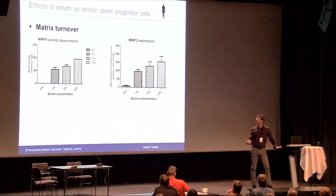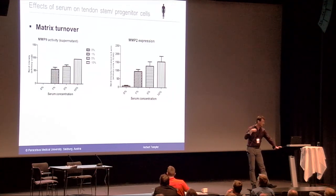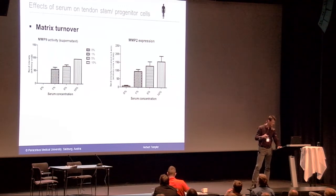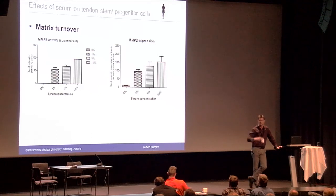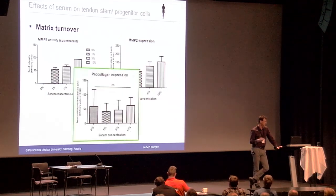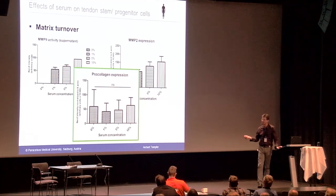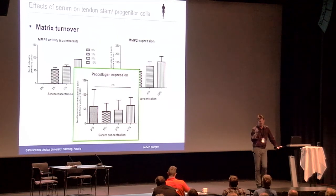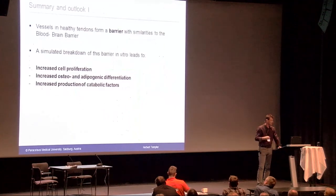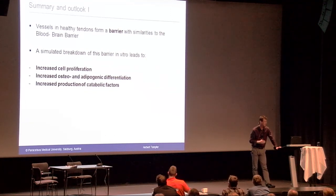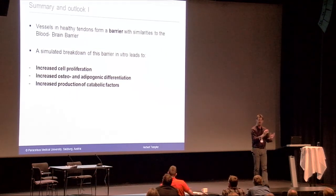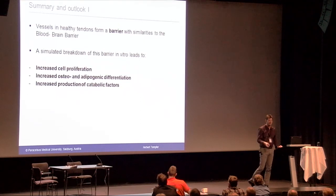Looking at MMP9 activity and MMP2 expression: both MMP9 and MMP2 increase their activities with increased serum concentrations. However, procollagen expression levels are not dramatically affected by the amount of serum added. So summarizing: in healthy tendons there is a barrier with very large similarities to the blood-brain barrier. If we simulate a breakdown of this barrier in vitro, we see increased cell proliferation, increased differentiation, and an increase in catabolic factors.